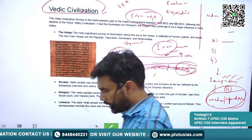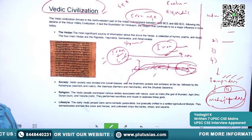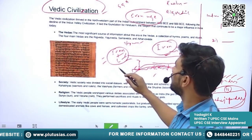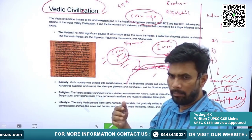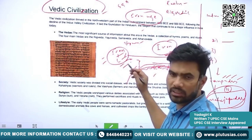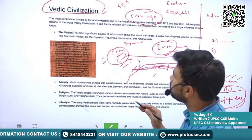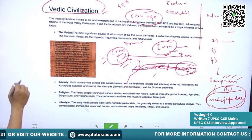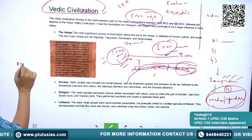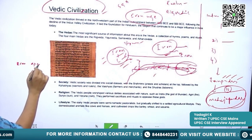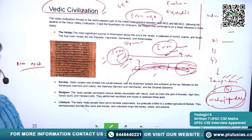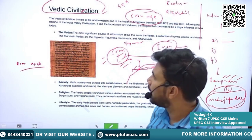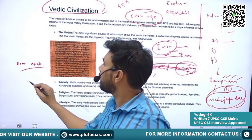Once iron had been discovered and implements started being made from iron, it was an entirely different story. In the Rig Vedic period, once iron was discovered, people used iron axes to clear vast areas of forest, and they started doing agriculture on that cleared land.